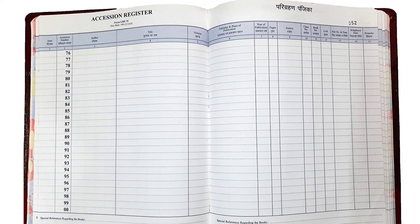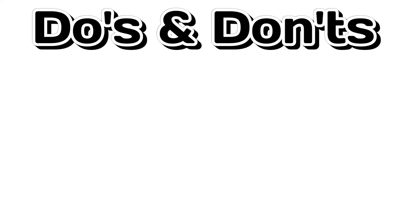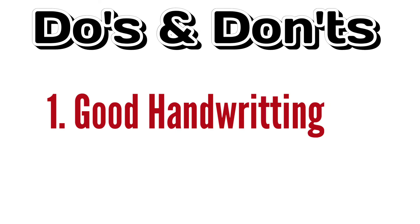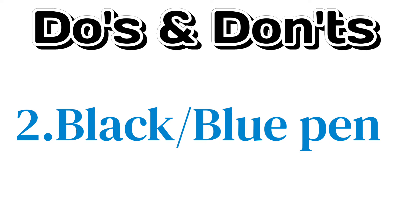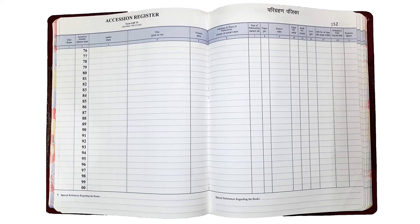The accession number shows the richness of your library — meaning the collection, the variety, and the numbers you have. There are two or three basic things to keep in mind when starting to enter data in the register. First, keep your handwriting very neat and clean. If you do not have good handwriting, write slowly and avoid cursive writing, which can make it difficult for others to read. Only use black or blue ballpoint pen, and avoid any kind of marker or gel pens in the accession register.